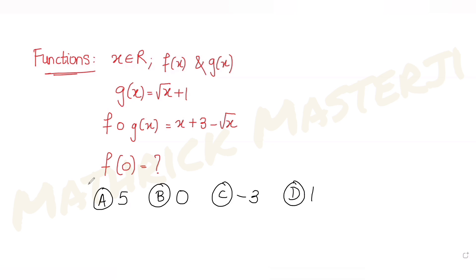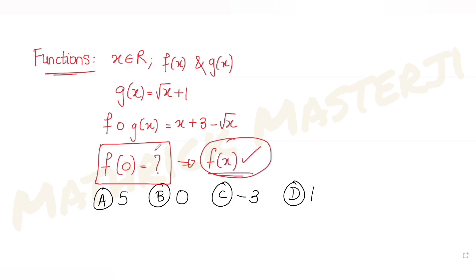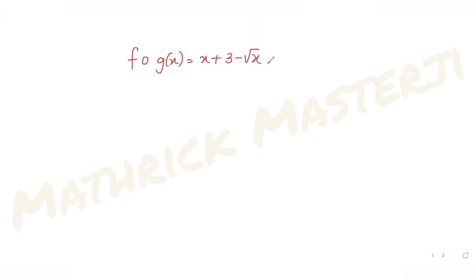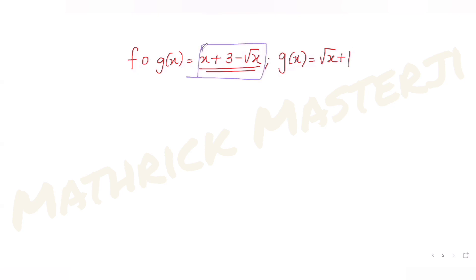We need to figure out the correct answer. First, I want to find f(0), for which I'll need f(x). Once I find f(x), I'll just put x = 0 to get f(0). To find f(x), we have been given f(g(x)) = x + 3 - √x and g(x) = √(x+1). We need to convert the entire f(g(x)) expression in terms of g(x), that is in terms of √(x+1).